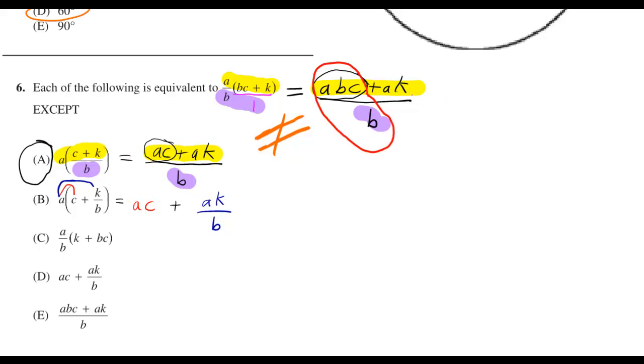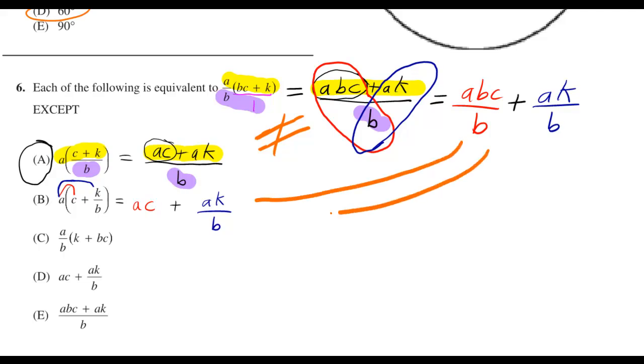For option B you could distribute and get ac plus ak over b, but that actually is equal to the original and you can figure that out with the heart method. These two are equal because here you can cancel the b's. Since that one is equal it's not the right answer, and we could go over why the other ones are not the right answers as well.